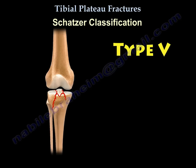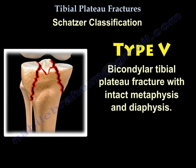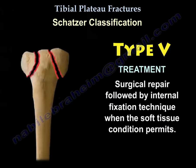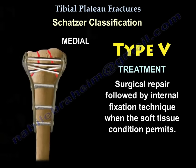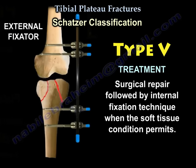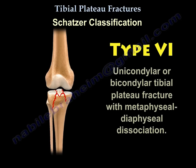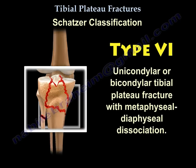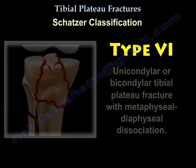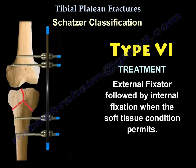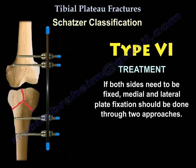Type 5 is bicondylar with intact metaphysis and diaphysis. Treatment is surgical repair, or temporary external fixation followed by internal fixation when soft tissue permits. Type 6 is a unicondylar or bicondylar tibial plateau fracture with metaphyseal-diaphyseal dissociation. Treatment starts with a spanning external fixator followed by internal fixation with minimal internal fixation when soft tissue condition permits. If fixing both medial and lateral sides, use medial and lateral plate fixation through two separate approaches.